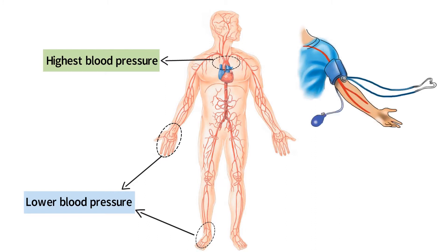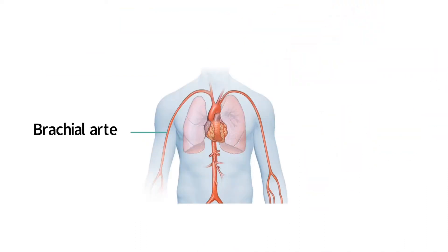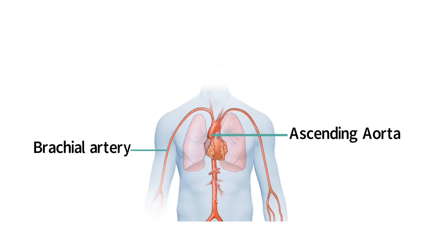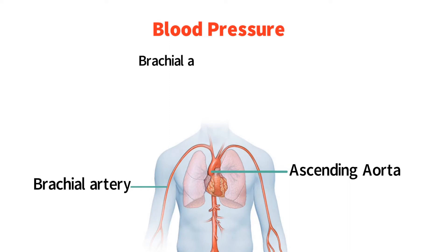When blood pressure is measured in a clinical setting using a blood pressure cuff and a stethoscope, the measurement is an estimate of blood pressure in the aorta. A commonly asked question is why blood pressure measurements are taken on the arm if the aorta is not located there. The answer is that measurements taken on the arm are taken on the brachial artery, which has very similar blood pressure values as the aorta. Blood pressure has not had an opportunity to decrease very much since flowing from the aorta into the brachial artery.